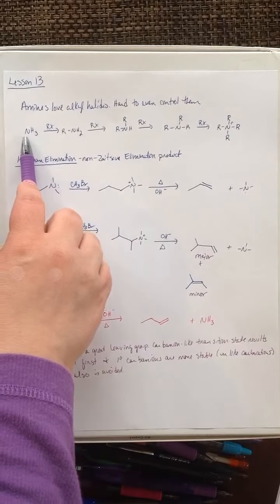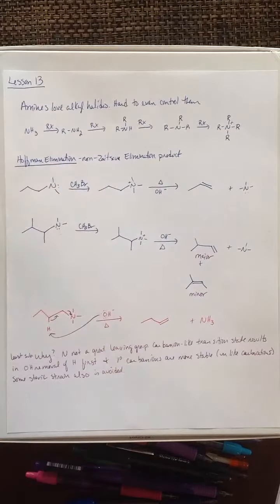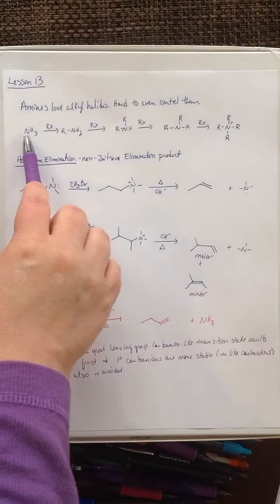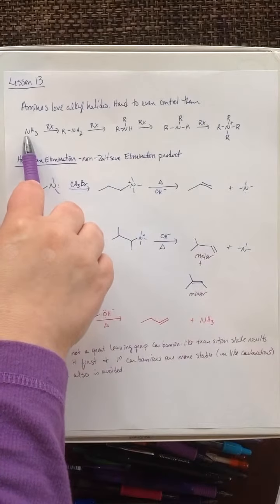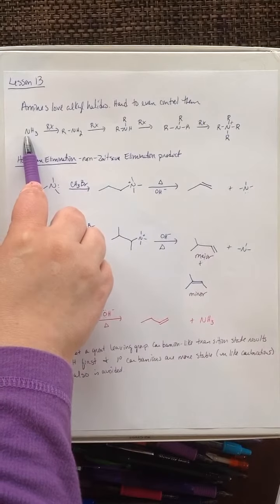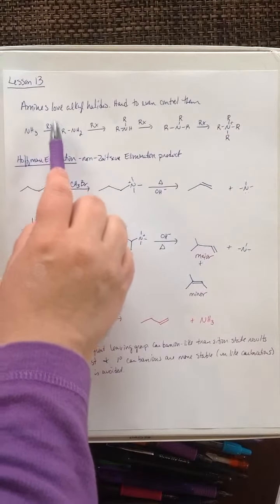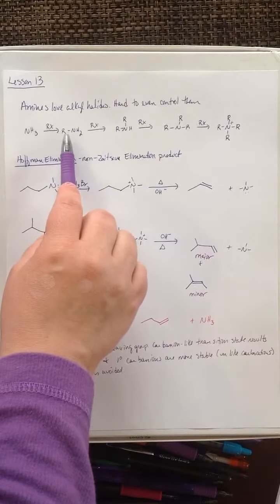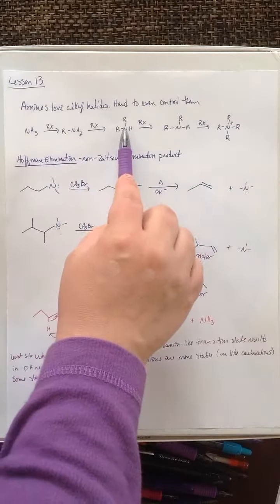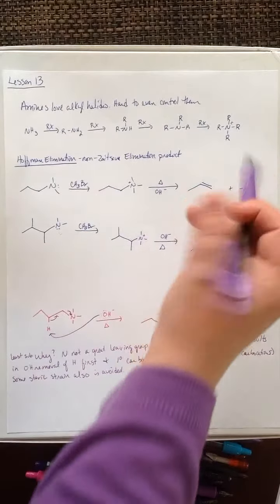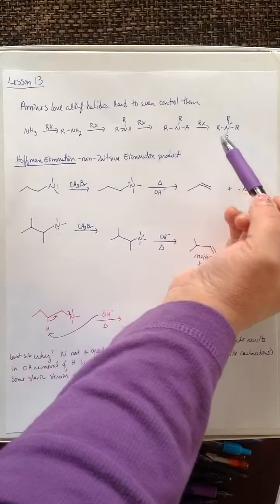When you have an amine and you add an alkyl halide, basically, it's very difficult to stop this reaction. Once alkyl halide is in its reach, it will react and react and react and react again until you end up with a quaternary ammonium salt.